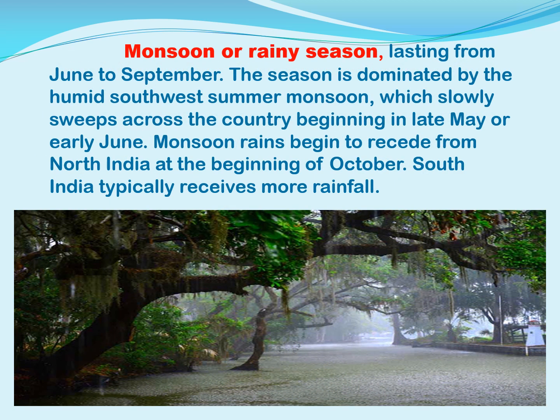Then comes the season of monsoon, which begins in June or July and stretches till September. The majority of rainfall takes place due to the southwest monsoons, which originate in the Bay of Bengal and the Arabian Sea. Monsoons witness heavy downpour which often results in floods in many regions. Farmers enjoy monsoon as their crops get an adequate supply of water. Children love playing in the rain and making paper boats. Monsoon rains begin to recede from North India at the beginning of October, while South India typically receives more rainfall.